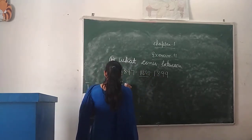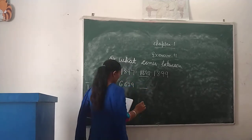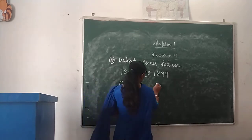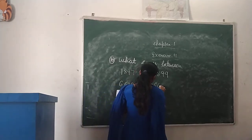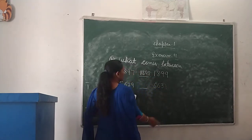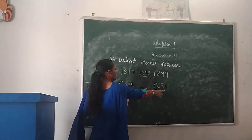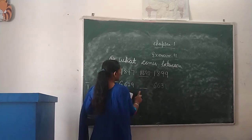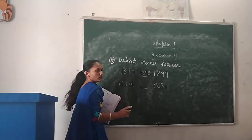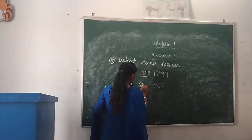Next is 6,625 and 6,630. Between 6,629 and 6,631 comes 6,630. So 6,630 is the answer.